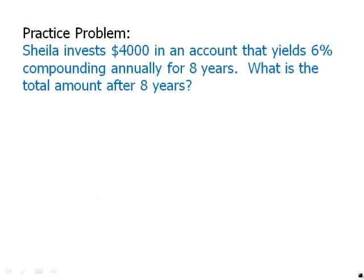Here's a formula, and I'll show what I mean. Sheila invests $4,000 in an account that yields 6% compounding annually for 8 years. What is the total amount after 8 years? Don't worry about getting the exact dollar amount — just get the correct expression for the amount in the account after 8 years. Pause the video and try this on your own.